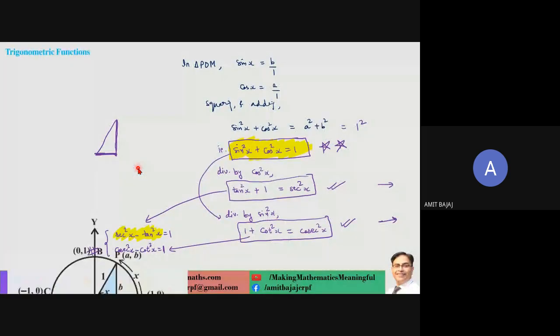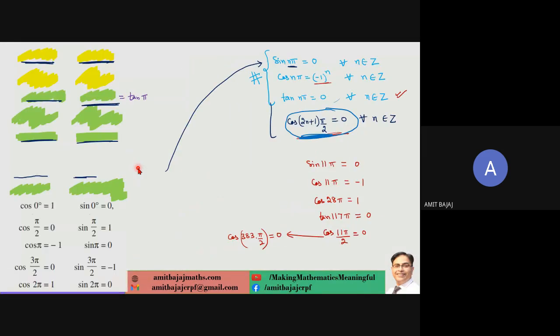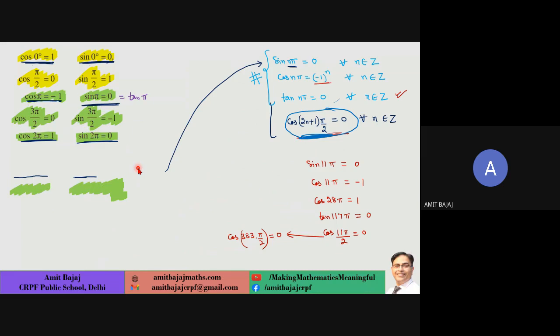Then we talked about trigonometric functions using the unit circle, and these basic formulas that you must remember: sin(nπ) = 0, cos(nπ) = (−1)^n, tan(nπ) = 0, and cos is 0 at odd multiples of π/2, i.e., cos((2n+1)·π/2) = 0. Remembering these values and rules makes graphing much easier.